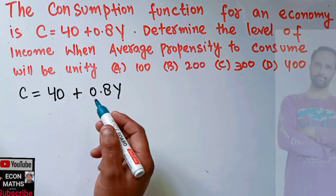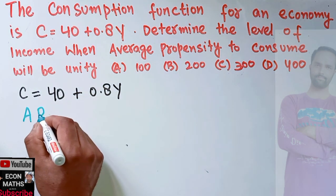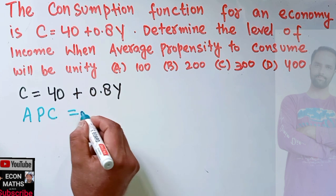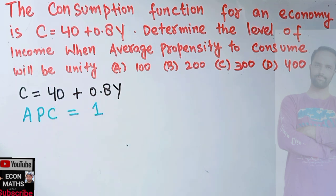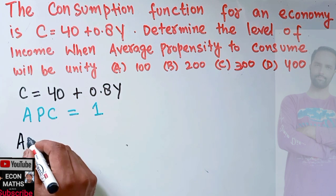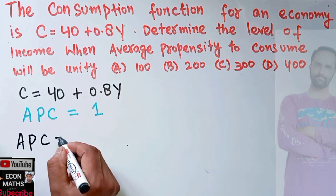Also, we are being told that average propensity to consume is equal to 1, which is unity. Now we know that average propensity to consume is simply equal to the total consumption upon income.